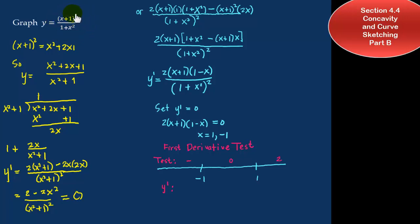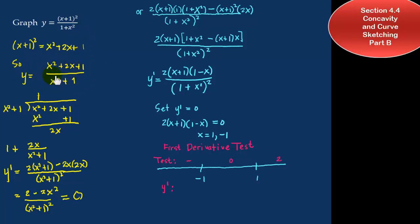If I square the top, it would look like x squared plus 2x plus 1. So this function can also look like x squared plus 2x plus 1 divided by — rearranged — 1 plus x squared, so x squared plus 1.